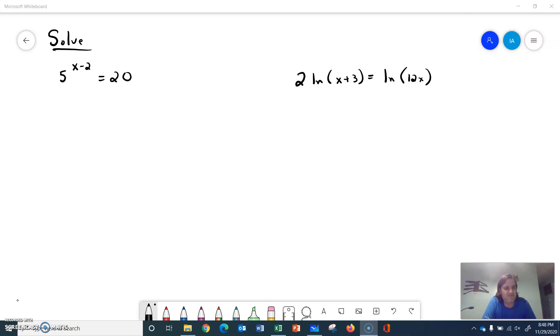So the first one here is 5 raised to the x minus 2 equals 20. Always kind of look at where your unknown is. It's in the exponent position of an exponential. You would like to get that out where you can move it around.